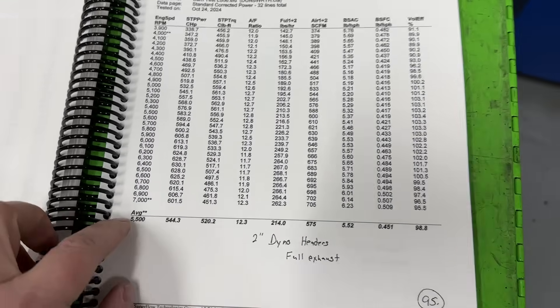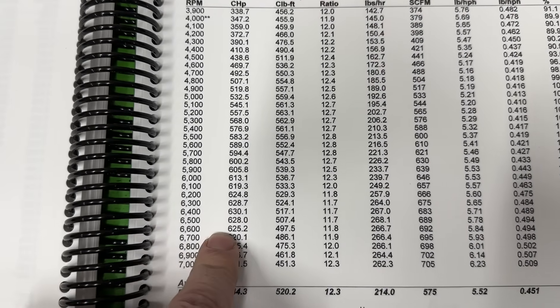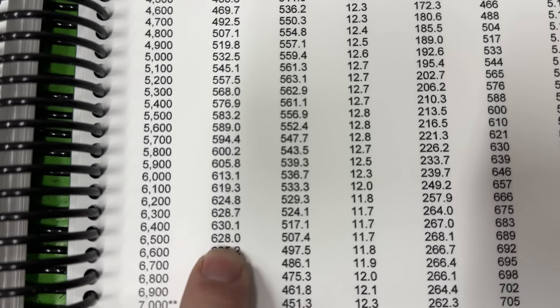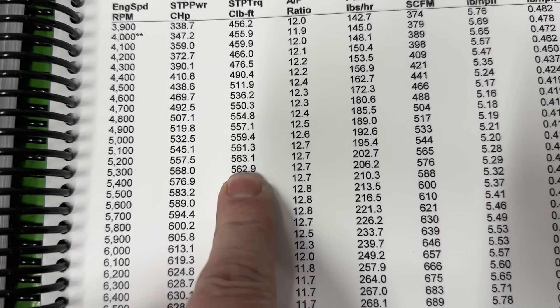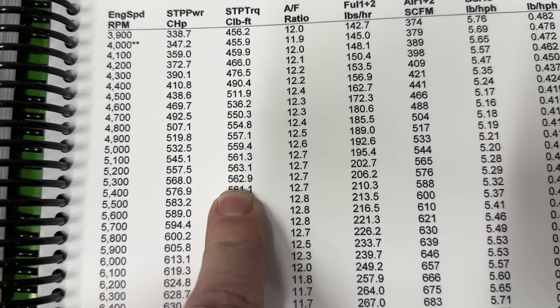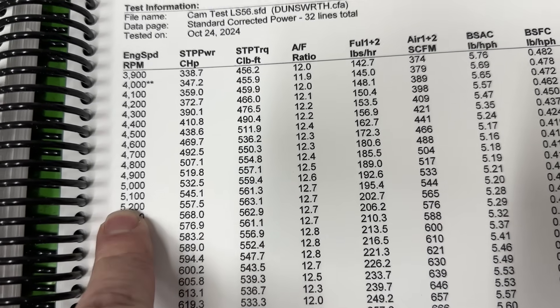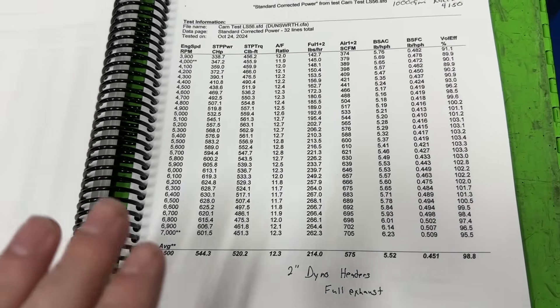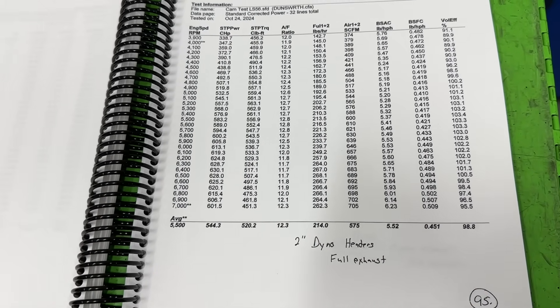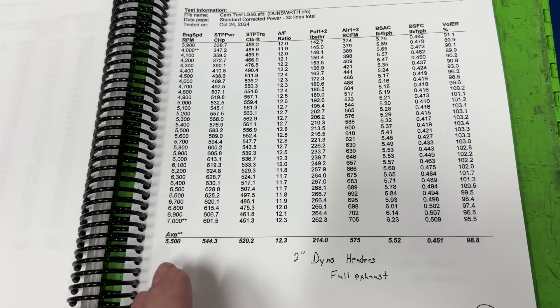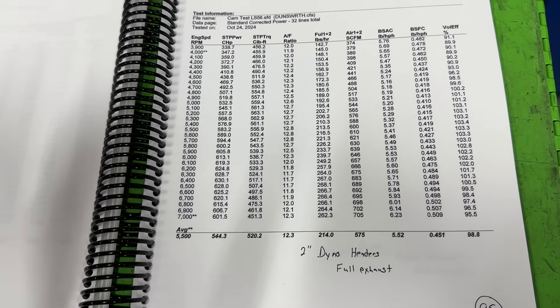So the first thing was the 2-inch headers went on with the full exhaust system, and just to give you an idea, just to show you some raw numbers, don't worry I'll show you overlays in a minute, 630 horsepower at 6400 RPM and torque was 563 at 5200.